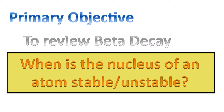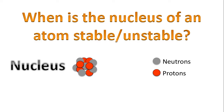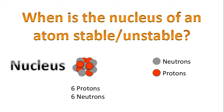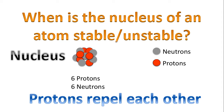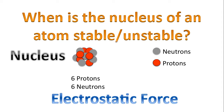So when is the nucleus of an atom stable or unstable? Here's a nucleus. Focusing on the nucleus and counting the number of neutrons and protons, we have 6 protons and 6 neutrons. Now recall that protons have a positive charge. As a result, since there are only protons within the nucleus, they will repel each other. This is referred to as an electrostatic force.